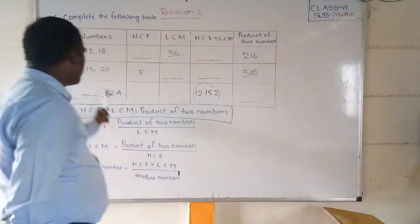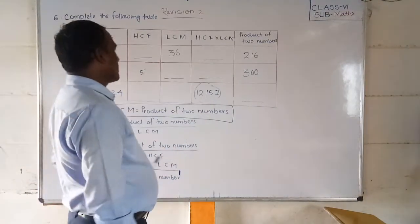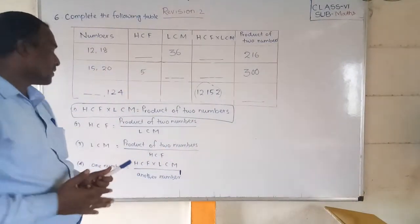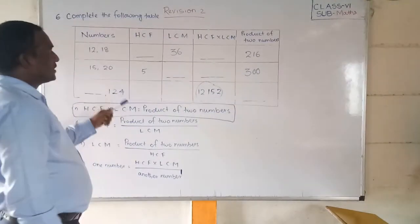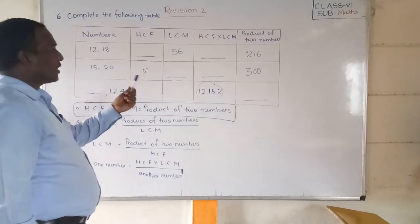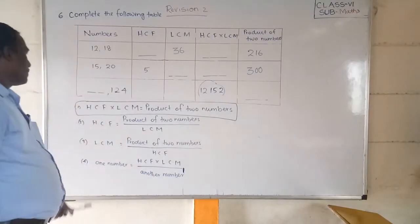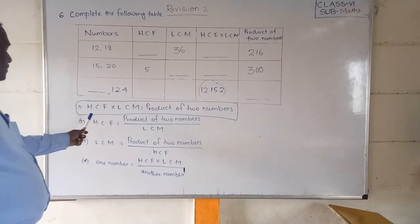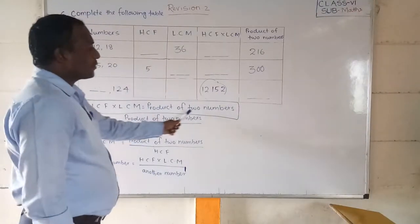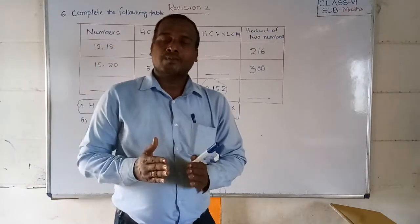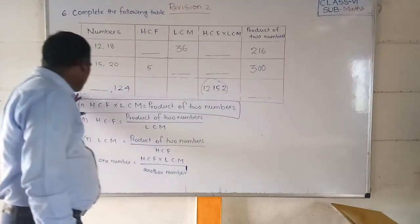So let us start. I have written on the board one table and we will have to complete this in class. Before that, we have to discuss the formulas to find out the HCF or LCM of two numbers. The first and very main formula is: HCF into LCM is equal to product of the two numbers.